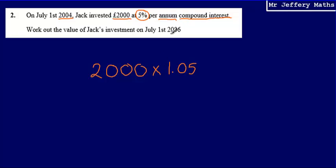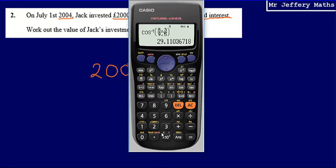And Jack has invested it for between 2004 and 2006, so he has invested it for two years. So two years is being paid per annum. So we're going to raise our percentage multiplier, 1.05, and we're going to just square that.